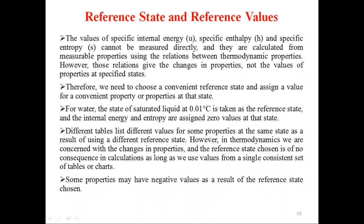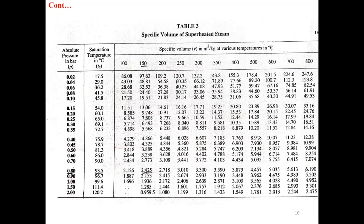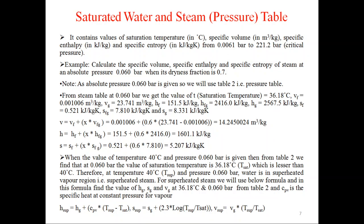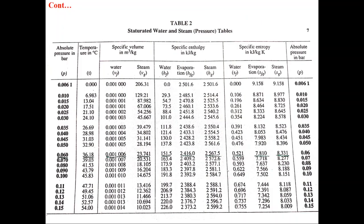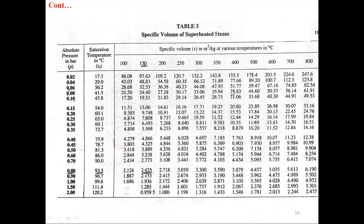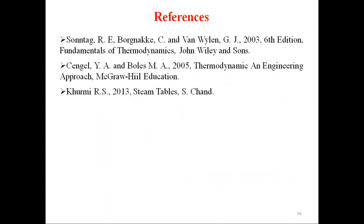In thermodynamics, we are concerned with changes in properties, and the reference state is of no consequence in calculation as long as we use values from a single consistent set of tables or charts. Some properties may have negative values as a result of the reference state chosen. The internal energy and entropy are assigned zero values at the reference state of 0.01°C.